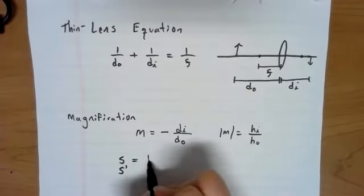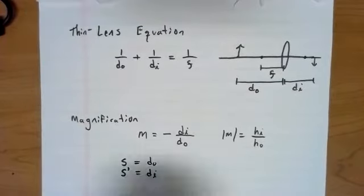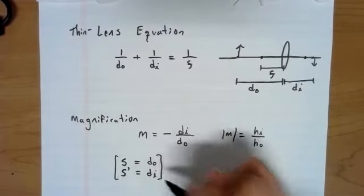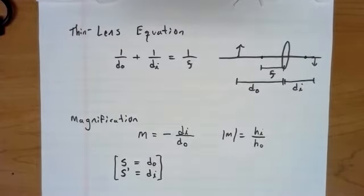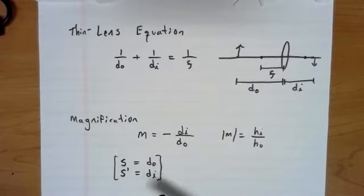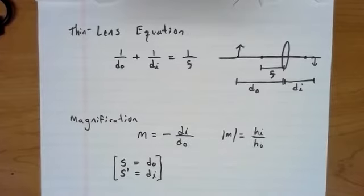And they will use S and S prime. Those are the same thing as DO and DI. Feel free to use whichever one you wish. Does not matter to me. If you're not my student, then check with your teacher. But I find DO and DI just to be more straightforward. But of course, use what your teacher wants you to use.